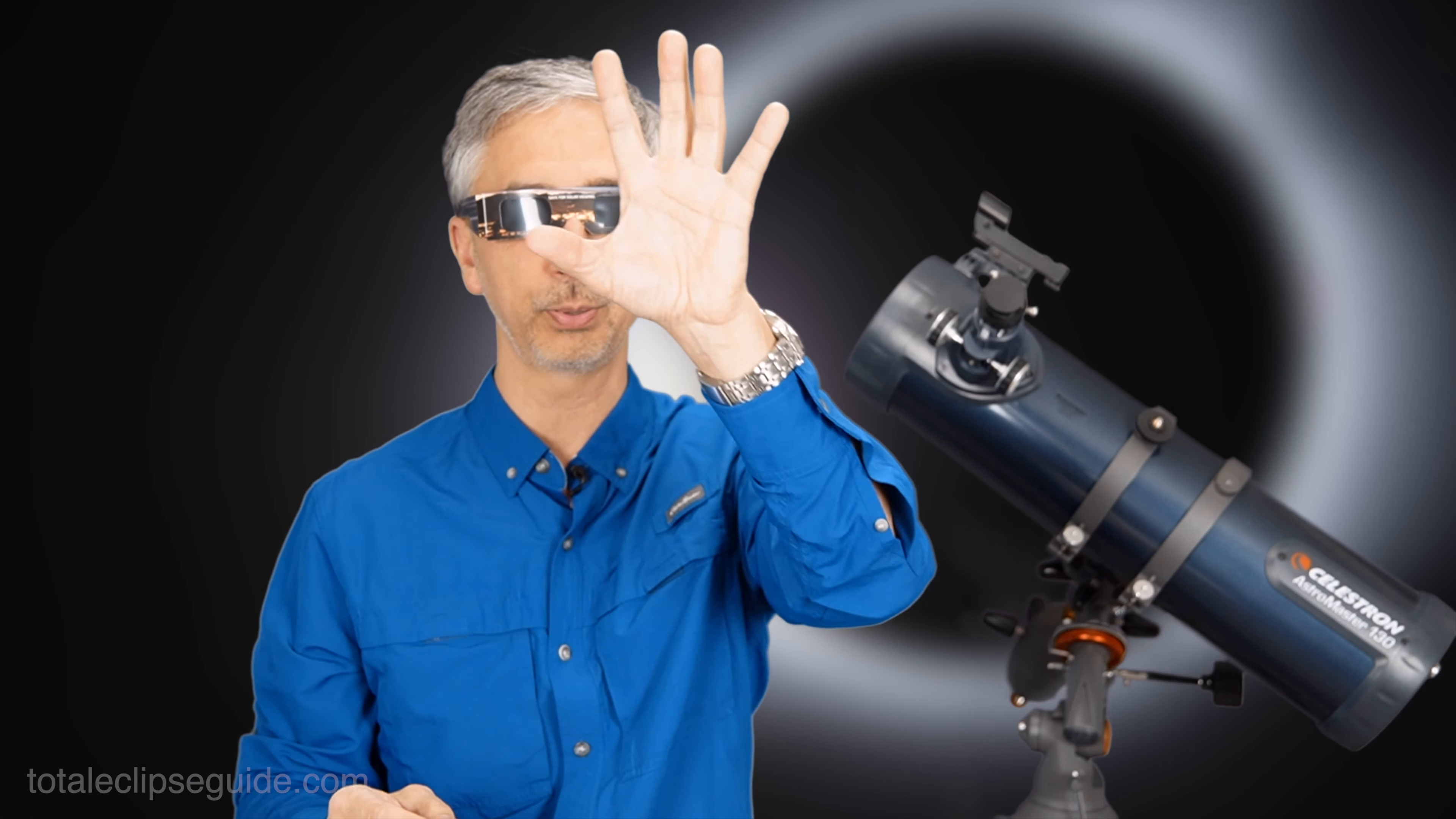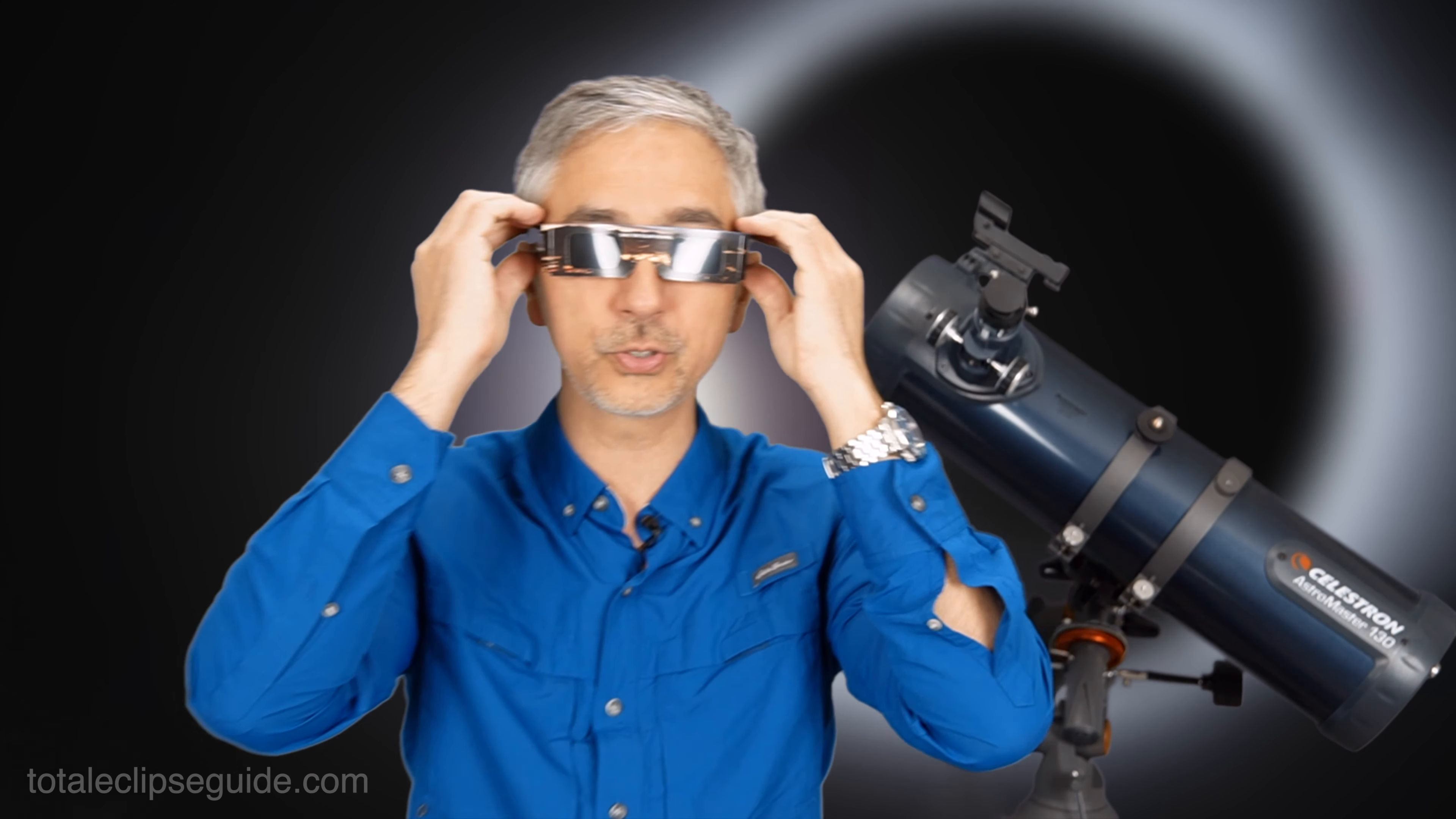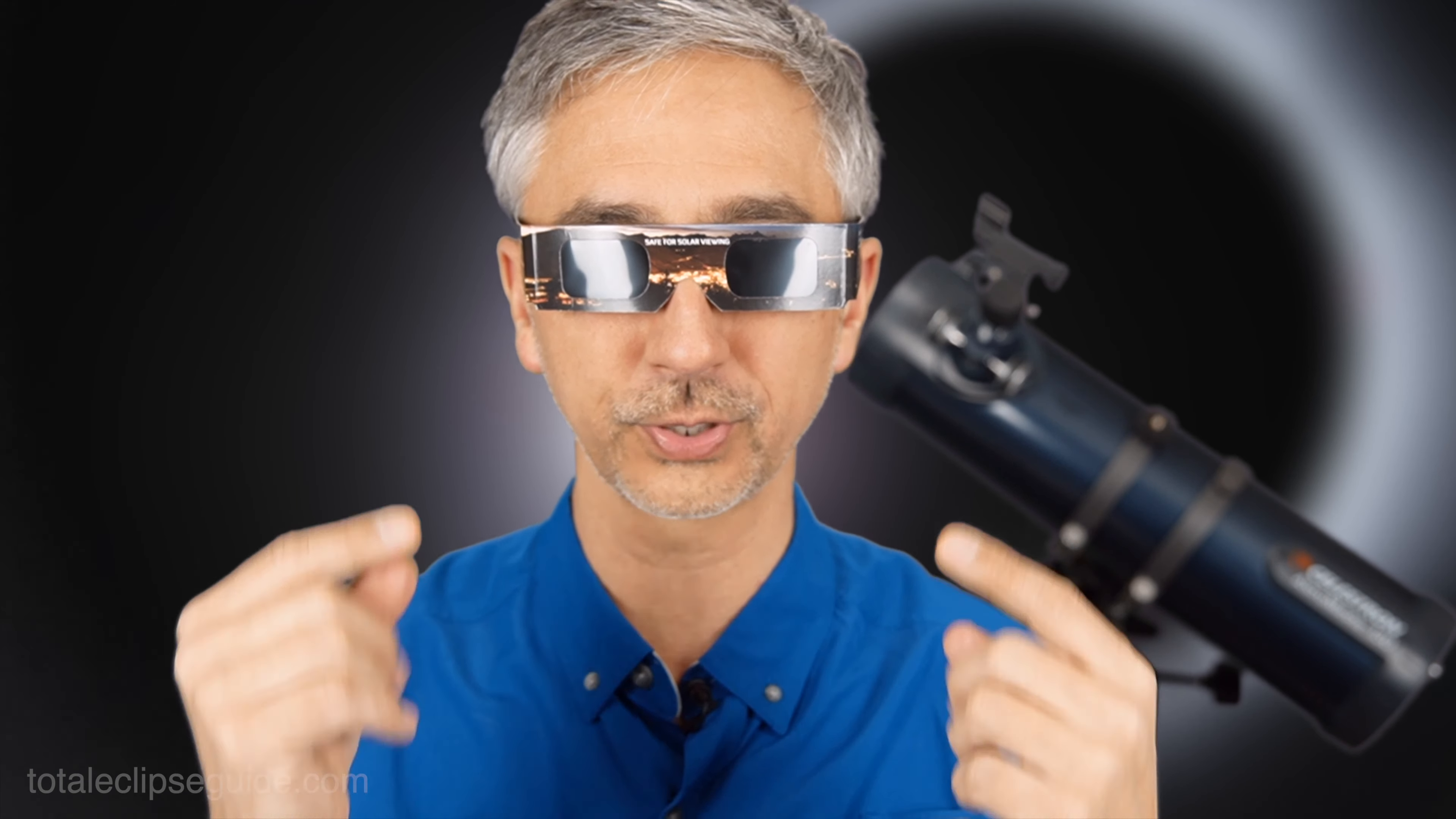The moment the moon completely occludes the sun, take your eclipse glasses off. You will see the corona of the sun, you will see the stars in the sky. It will be spectacular. And the moment the moon moves a little bit more and the sun reappears, put your solar eclipse glasses back on to protect your oh so precious eyeballs.